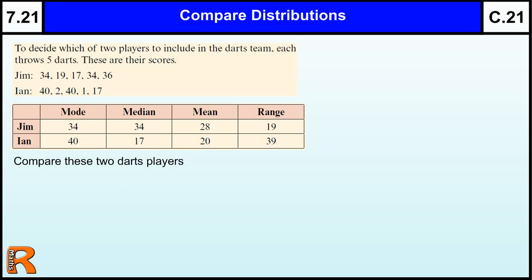When we are comparing two sets of data, we need to think about two main things. One is a measure of their average, or what could be termed as a measure of the center. The other is their spread of values, or their range, and that's a measure of consistency or spread.